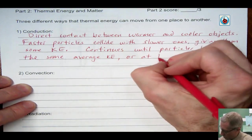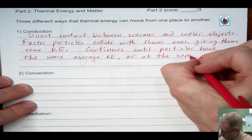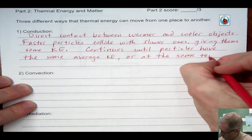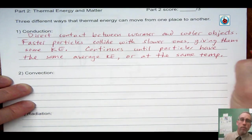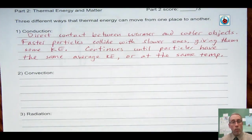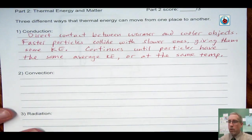So if they're in contact long enough, we'll say continues until the particles have the same average KE, or that means they're at the same temperature. So the cooler thing got warmer, the warmer thing got cooler. They're going to meet somewhere in the middle, but definitely somewhere between the hot and cold temperatures. So that's conduction.